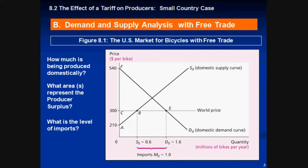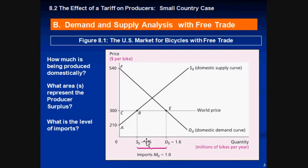We're going to start with a simple analysis of how producer surplus is affected when a tariff comes in. In this graph, we see a simple demand and supply curve — the domestic supply curve and domestic demand curve. This is with free trade and no tariff. How much is being domestically produced? With the supply line, we have 0.6 million, or 600,000 units being produced.